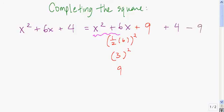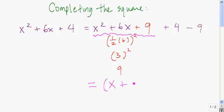Next we're going to focus on this trinomial right here. Adding the square of half of this number produced what's called a perfect square trinomial. The reason it's called a perfect square trinomial is that if we factor x squared plus 6x plus 9, we get x plus 3, quantity squared. That is called a perfect square, therefore this is called a perfect square trinomial.